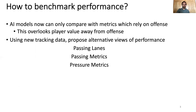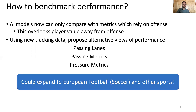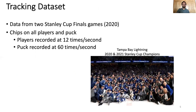Using new tracking data, we propose 12 metrics for an alternative view of performance around passing lanes, passing metrics, and pressure metrics. While our paper only discusses ice hockey, we believe our metrics could also expand to other sports like European football. Our sample dataset consists of two games from the 2020 Stanley Cup Finals. Every player and puck carries a tracking chip. Players are sampled 12 times per second, and the puck is sampled 60 times per second.